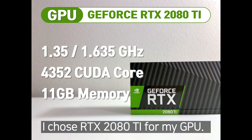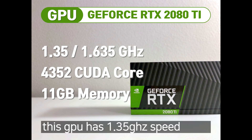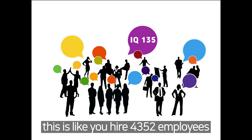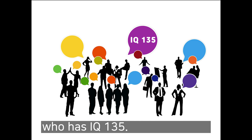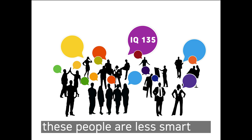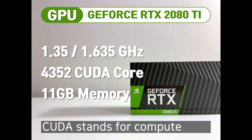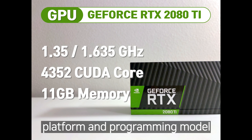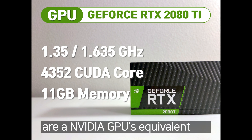This GPU has a speed of 1.35 GHz but has 4,352 CUDA cores. This is like you as CEO hiring 4,352 employees with an IQ score of 135. These newly hired employees are less smart than the CPU team but smart enough to get the job done. CUDA stands for Compute Unified Device Architecture, which is a parallel computing platform and programming model. You can consider CUDA cores as an NVIDIA GPU's equivalent of CPU cores.